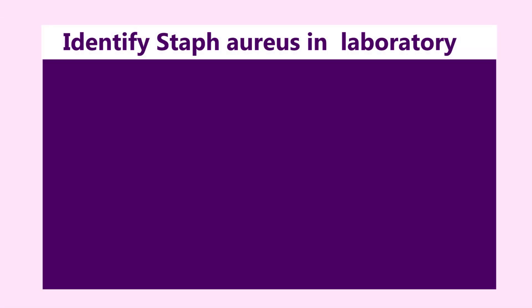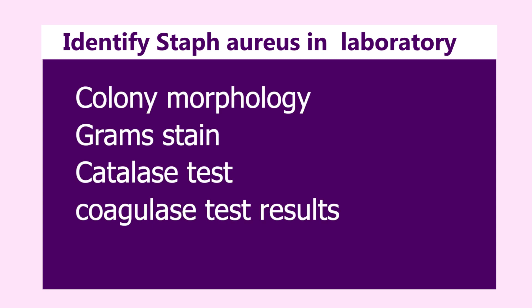So using colony morphology, Gram stain, catalase test, and coagulase test results, we can identify Staphylococcus aureus in the laboratory.